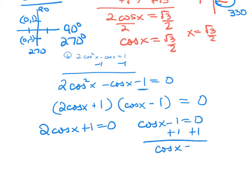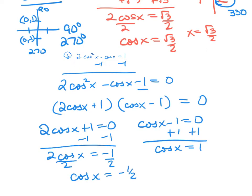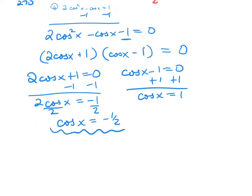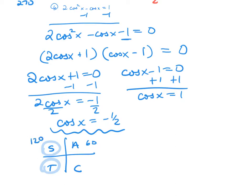Now set each factor equal to 0. Adding 1 to the first factor and dividing by 2 gives cosine x equals negative 1 half. Doing all students take calculus — cosine is negative in quadrants 2 and 3. My reference angle is 60 degrees. So 180 minus 60 gives 120, and 180 plus 60 gives 240.